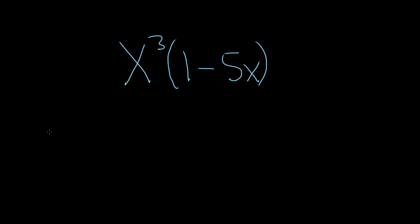In this problem, we're being asked to find a linear differential operator that annihilates this function. So in order to do that, it might be easier to first distribute this x cubed. So x cubed times 1 will give us x cubed, and then x cubed times minus 5x will give us minus 5x to the fourth.